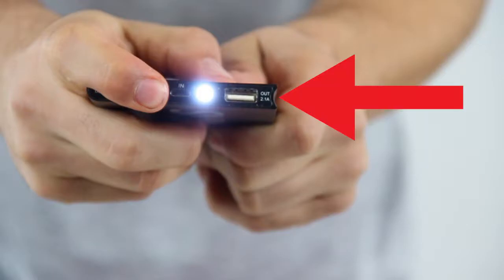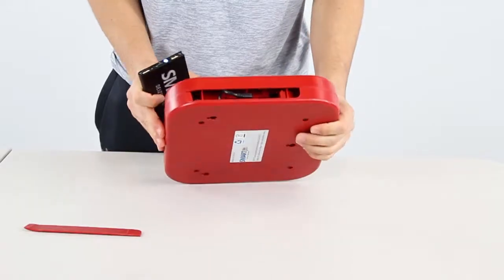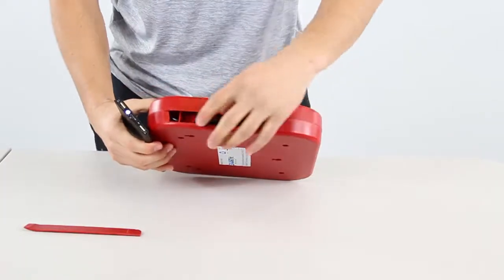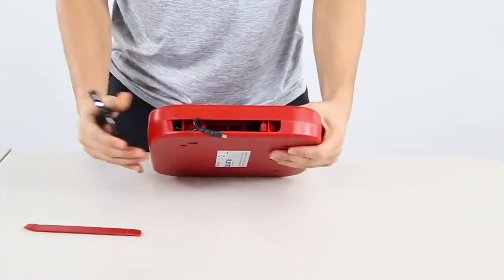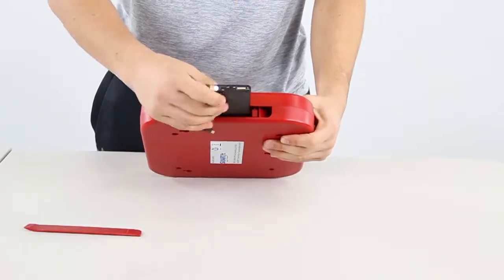Notice the 2.1 amp USB port on the side of the battery. When placing the battery in the pod casing, make sure the 2.1 amp USB port is closest to the USB wire inside the pod casing.